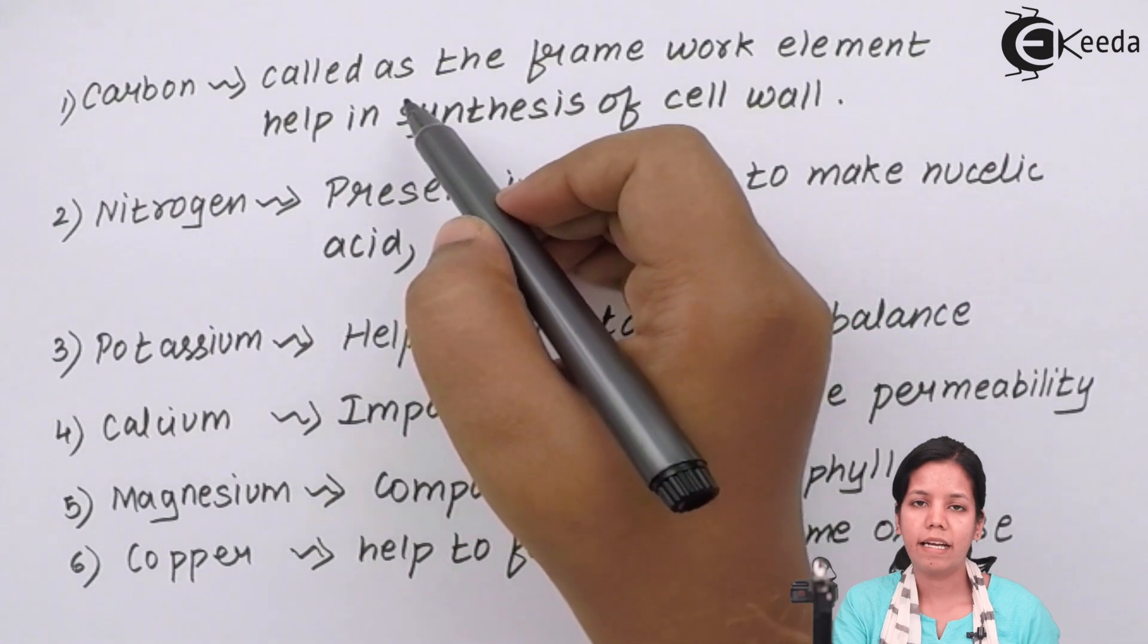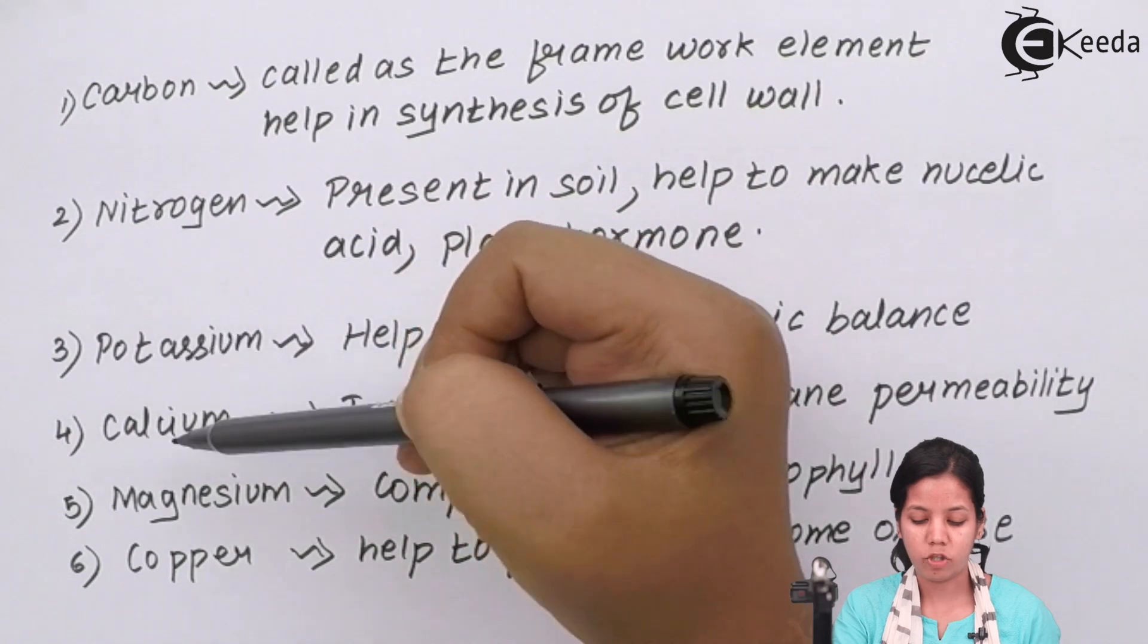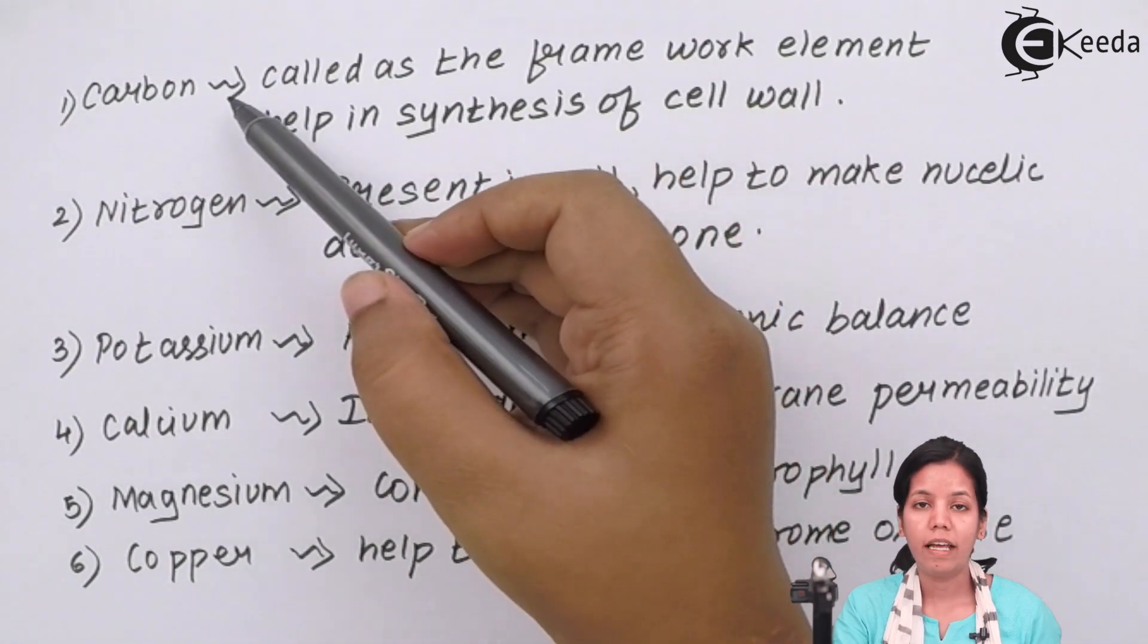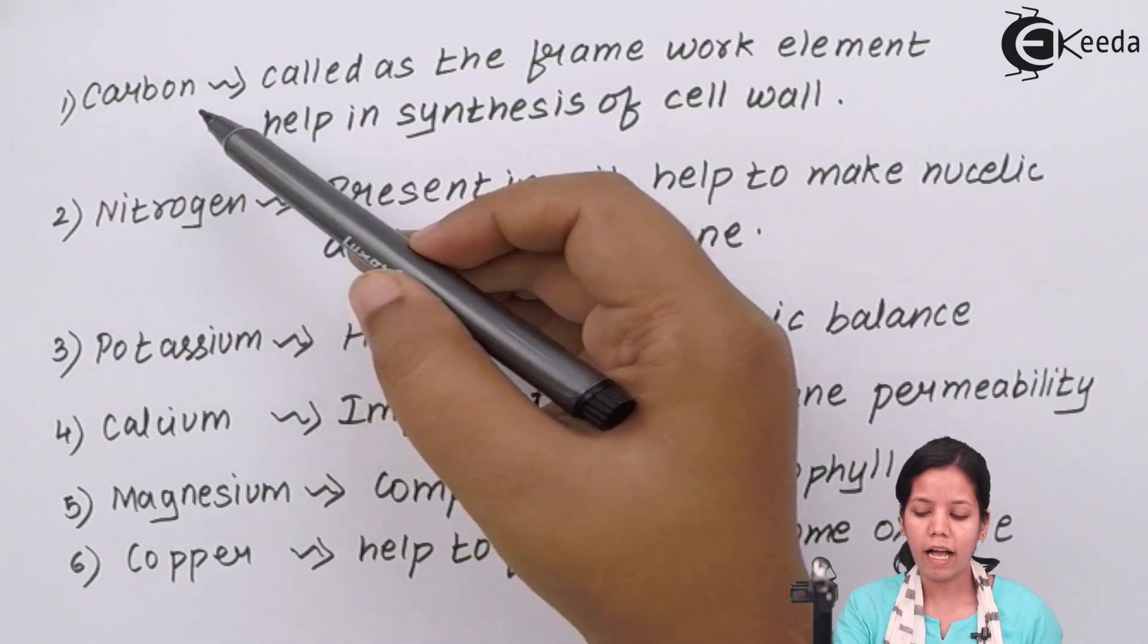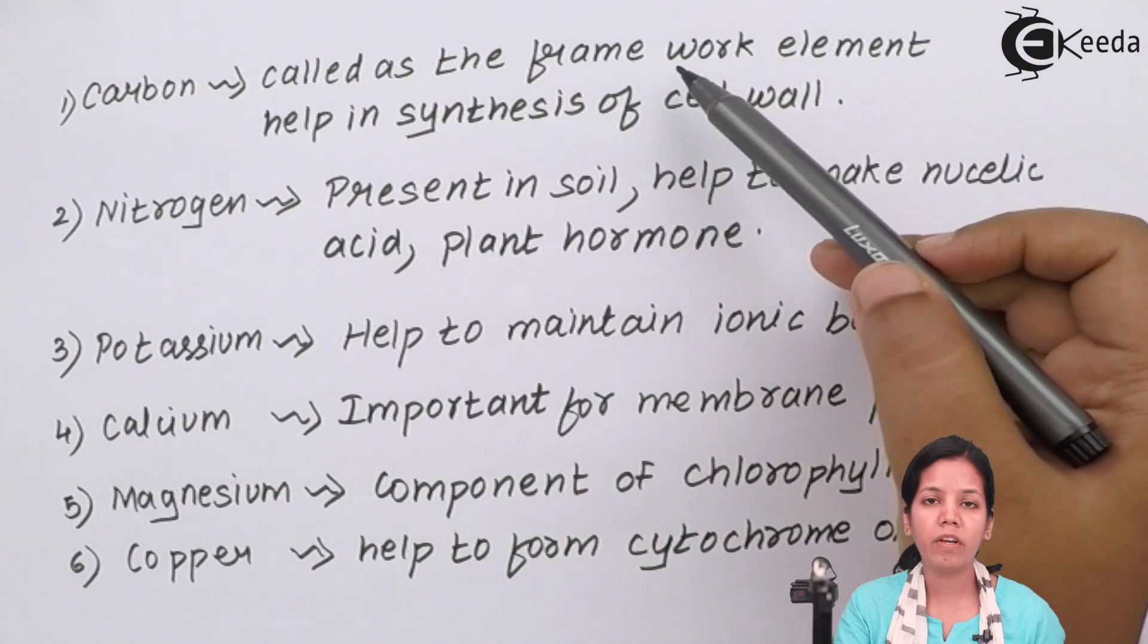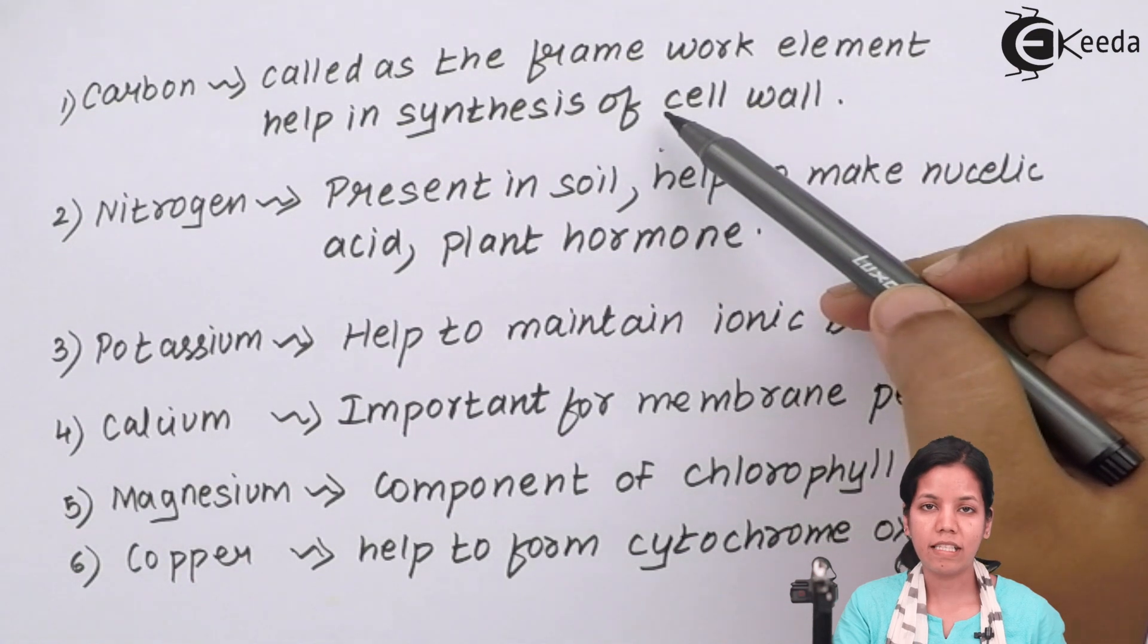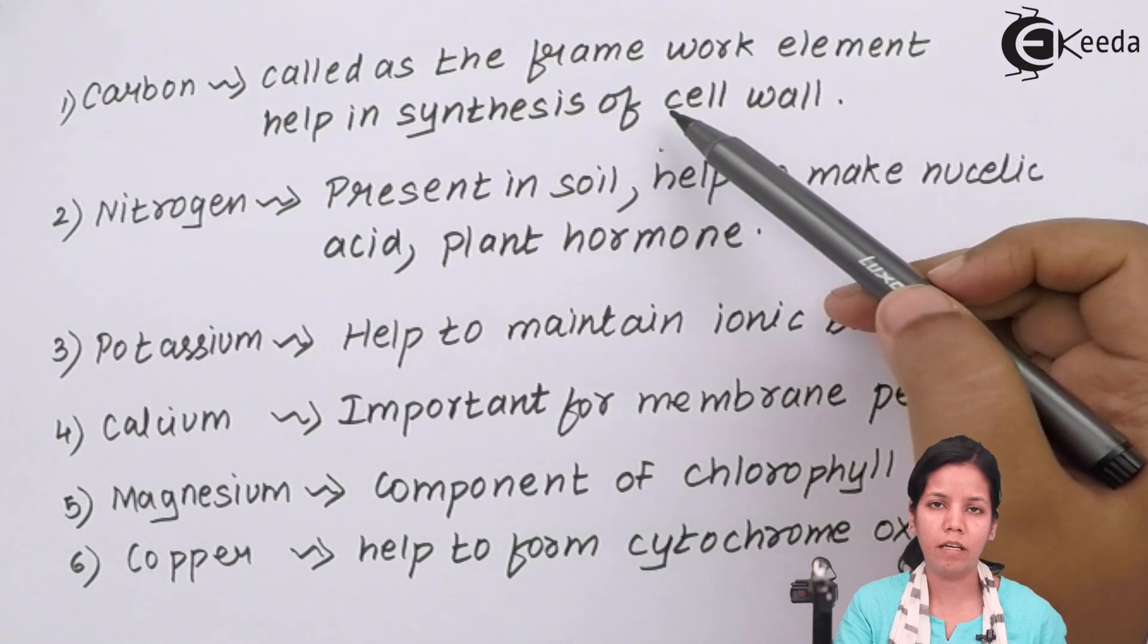The various elements that help in the growth of plants are carbon, nitrogen, potassium, calcium, magnesium and copper. Carbon is a macro element which is required in larger quantities for plant growth. Carbon basically forms the framework element or the stable bodies. Cell wall formation is basically dependent on carbon. This cell wall provides the rigidity to a plant cell and this is taken care by the production of carbon.